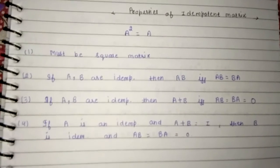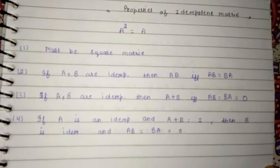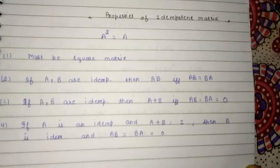If A and B are idempotent, then A plus B is idempotent if and only if AB is equal to BA is equal to zero.